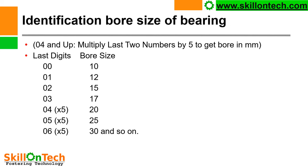To identify bore size: if the last two digits are 04 and above, multiply those last two digits by 5 to get the bore in mm. But if they are less than 04, the bore size is given as a table: 00 = 10 mm, 01 = 12 mm, 02 = 15 mm, 03 = 17 mm. For 04, 05, 06 it will be 20, 25, and 30 mm respectively, and so on as size increases.